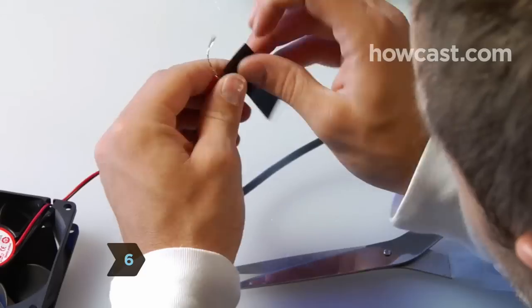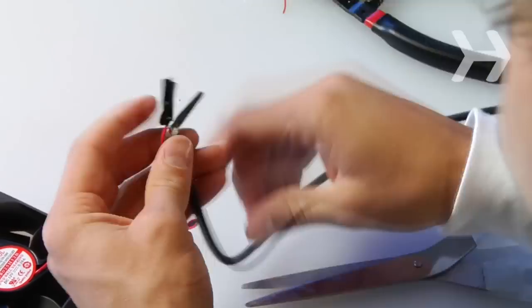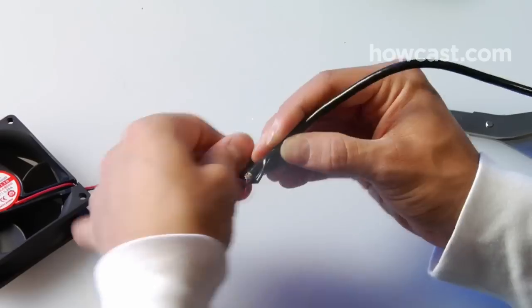Step 6. Wrap the two individual sets of connected wires separately in electrical tape. Then tape and wrap both sets together to form one cable.